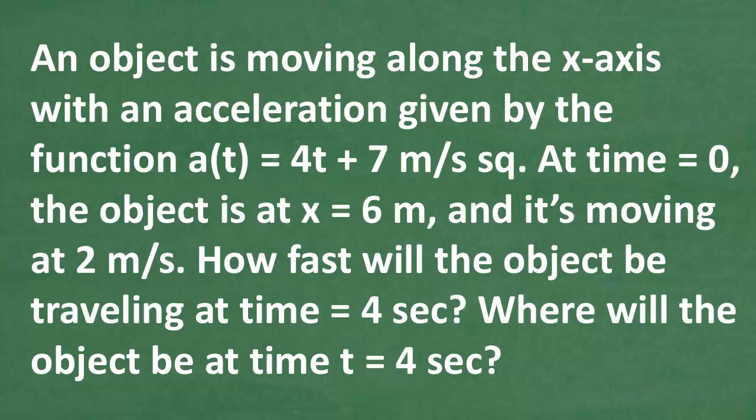Let's go ahead and read the problem. An object is moving along the x-axis with an acceleration given by the function a(t) = 4t + 7 meters per second squared. At time t = 0, the object is at x = 6 meters and it's moving at 2 meters per second. How fast will the object be traveling when t = 4 seconds? And where will the object be at t = 4 seconds?